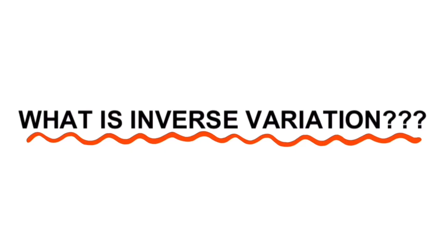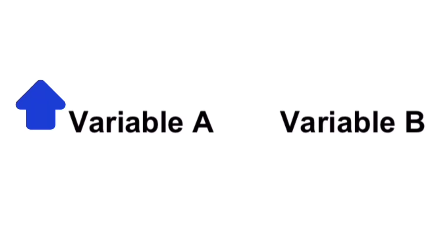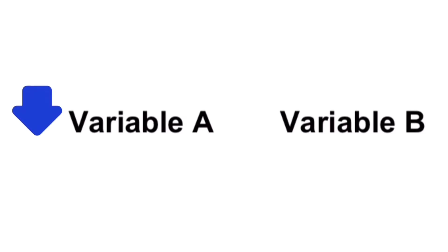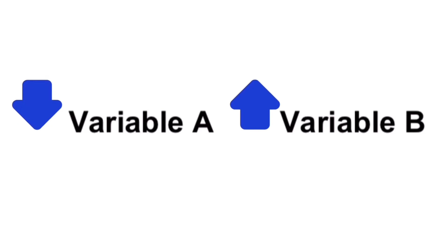So what is inverse variation? To better understand this type of variation, let's look at variable A and variable B. For inverse variation, if variable A increases, variable B will decrease. Notice the direction of the arrow — one goes up while the other goes down. On the other hand, if variable A decreases, then variable B will increase. The arrows go in opposite directions, and that is what we mean by inverse variation.